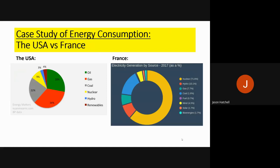There are two case studies you must look at in this topic: the USA and France. On screen you've got two pie charts showing the USA's energy consumption on the left and France's energy consumption on the right. There are very key differences between them. The USA's energy mix is much more varied than France's — it doesn't rely heavily on one or two sources, but has a good mix of at least four: oil, gas, coal, and nuclear.